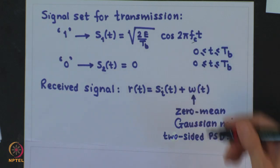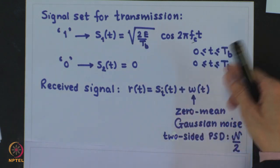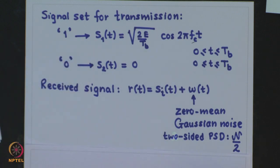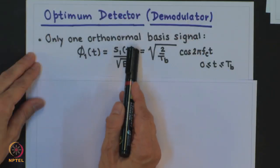The first thing when we analyze this modulation scheme is that we have to decide how to represent the signal set in terms of signal vectors. What we are looking for is basically the signal constellation or the signal space diagram for the given signal set. In this case it is easy to see that for these 2 signals we have only 1 orthonormal basis signal. That basis signal we can choose to be phi_1(T) equal to S1(T) normalized by the energy E.